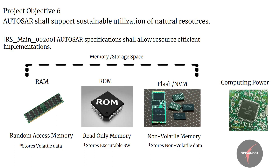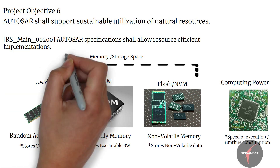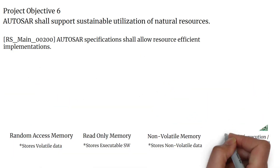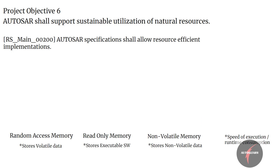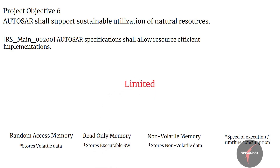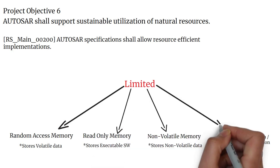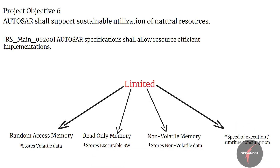Computational power accounts for the speed of processing functions, usually called runtime consumption of the ECU. Generally, automotive microcontrollers are categorized by limited resources like Flash, RAM, and computational power on the chip.